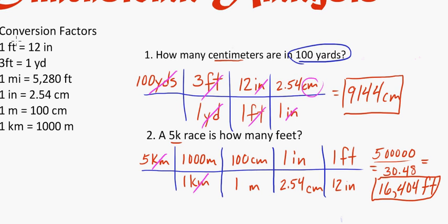To double-check, I'll make sure I have the right units by going back and canceling them out: meters cancel out, centimeters cancel out, inches cancel out, and I'm left with feet — which is exactly what I was looking for. I hope this example helps when you're trying to work through dimensional analysis, conversion factors, and converting those difficult units. Thanks for watching.